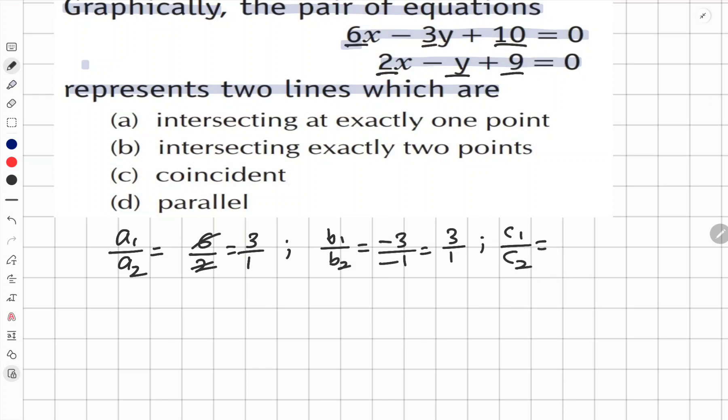And then we need to find the third ratio, that is c₁ upon c₂, that is 10 upon 9. Now we need to analyze this. Are the two ratios the same?